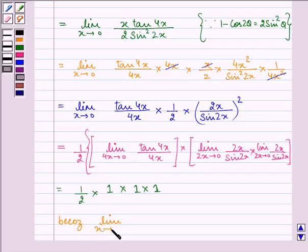Limit x approaches 0 the value of tan x upon x is equal to limit x approaches 0 sin x upon x is equal to 1.